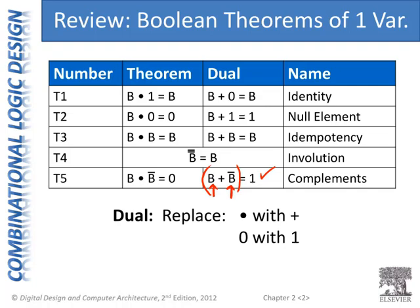Something OR one is one. And going back to the prior version of the theorem, T5, one of these terms is going to be zero no matter what — zero in an AND operation makes the entire expression evaluate to zero. So that's a quick review of our theorems of one variable: theorems T1 through T5 as well as their duals.